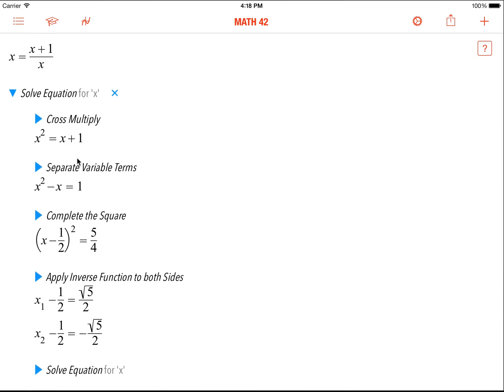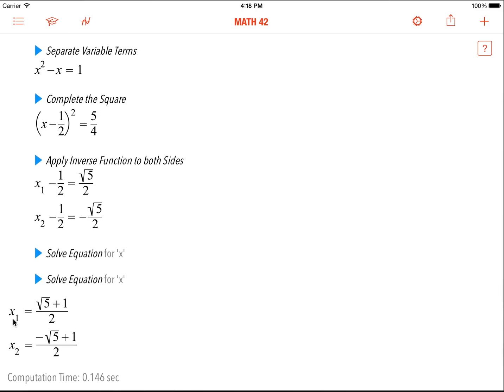As you see here, cross multiply, separate variable terms, complete the square, down to x1 and x2, which are the solution.